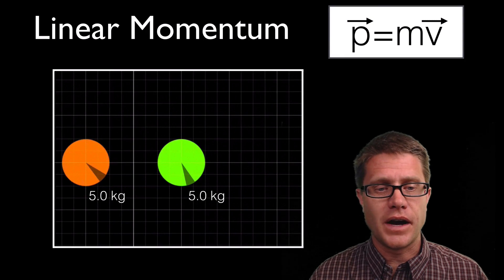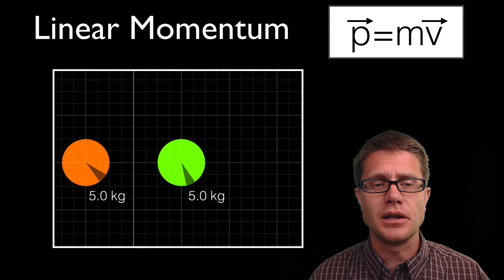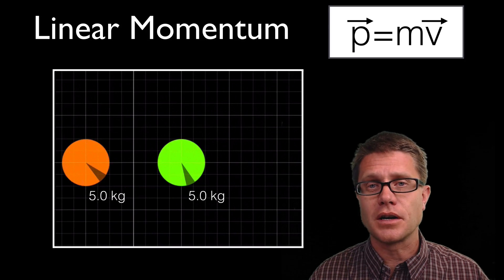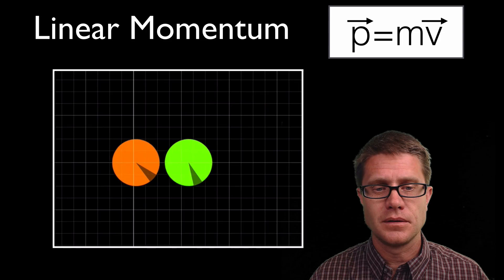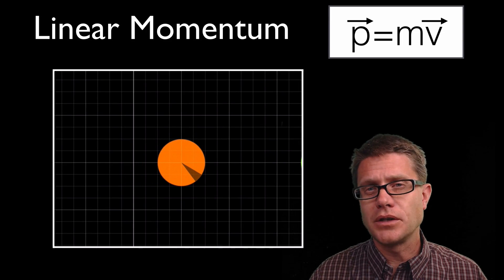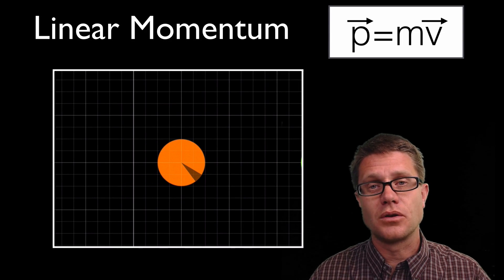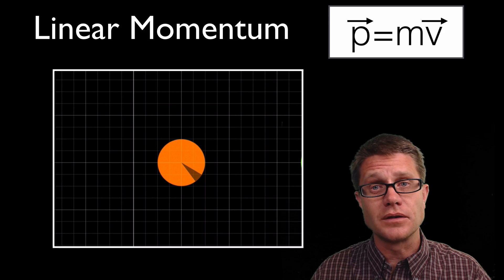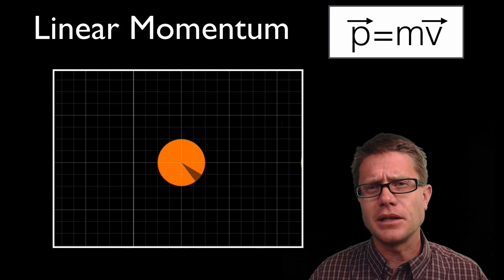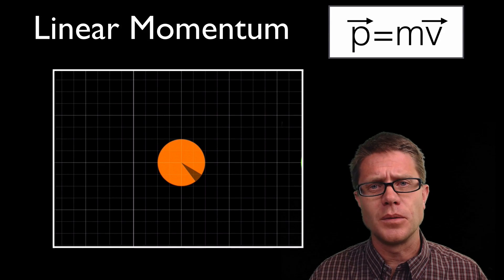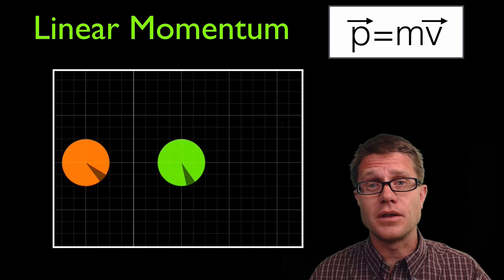We have two spheres — they are 5 kilogram spheres. I have removed gravity and we are just going to let the orange sphere collide with the green sphere. You can see we are transferring some of that momentum from the orange to the green sphere, but the orange is still moving so it did not transfer all of its momentum. So how do we calculate the momentum of the sphere before and after the collision?